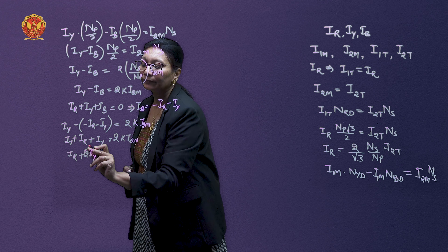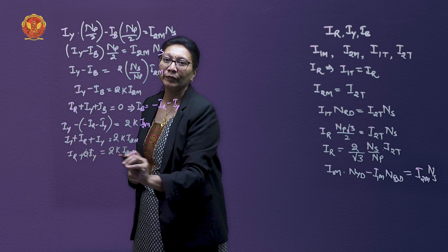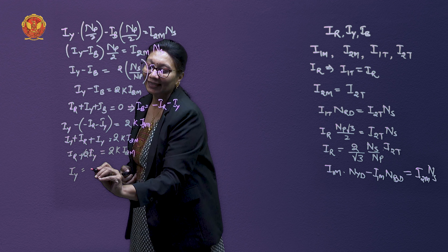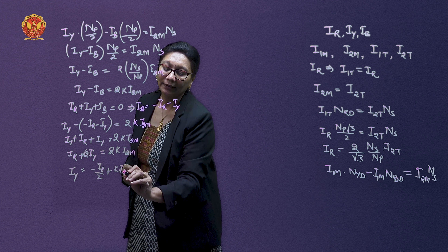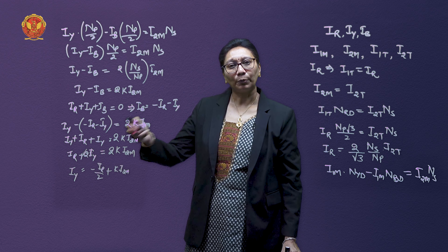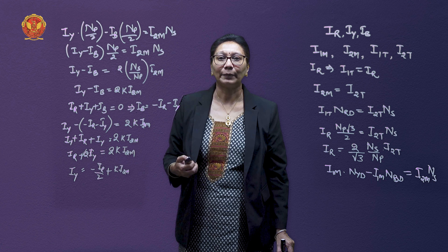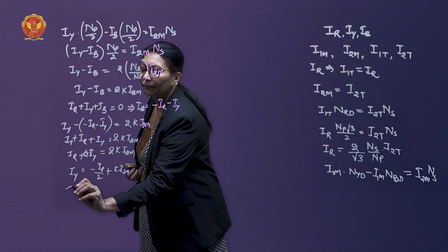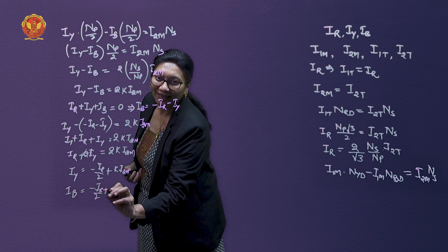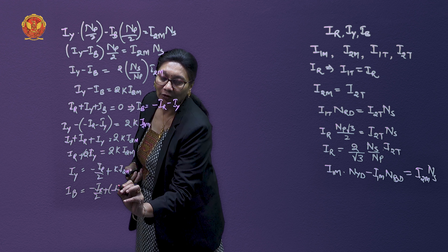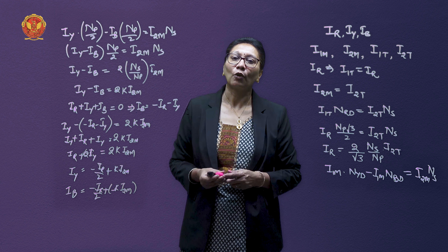From IR + 2IY = 2K × I2M, we get IY = −IR/2 + K × I2M. Substituting this value of IY back into the expression for IB, we also obtain IB = −IR/2 − K × I2M. This way, we can determine the currents for all three phases of the main transformer, and these current equations are valid for both balanced and unbalanced loads.